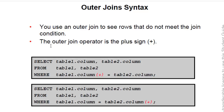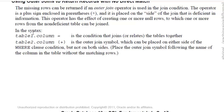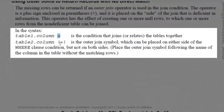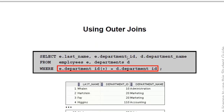The outer join operator is the plus sign. When we are using the outer join condition, we are using two operators: the plus sign and the equal to sign. The equal to sign defines the condition that joins or relates the tables together, and the plus sign is the outer join symbol which can be placed on either side of the WHERE clause condition, but not on both sides. Place the outer join symbol following the name of the column in the table without the matching rows.